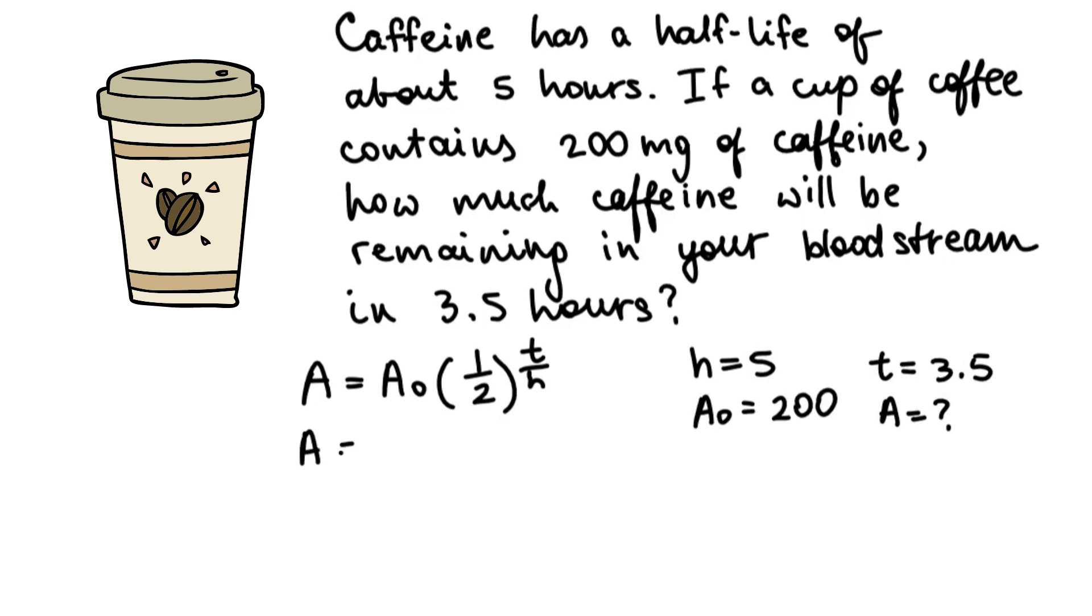A equals 200 times one-half to the power of 3.5 over 5. First, divide the exponent. Then, raise one-half to the power of what you find. And then, multiply by 200 at the end. So there should be approximately 123 milligrams of caffeine remaining in your bloodstream after 3.5 hours.